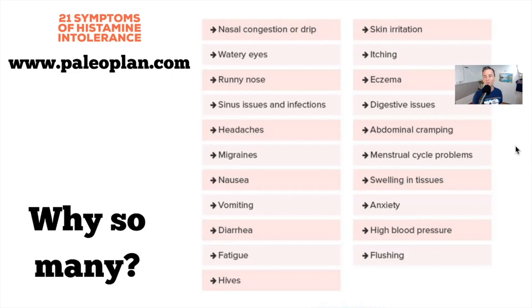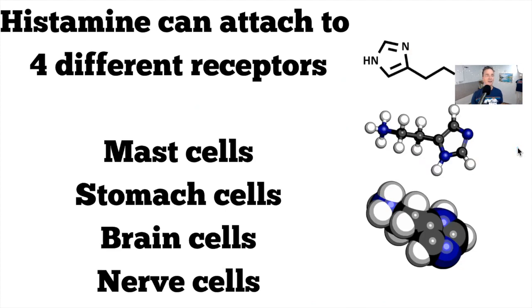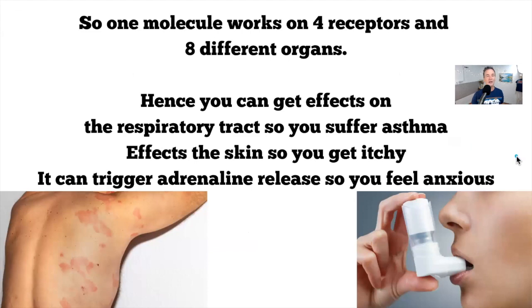Why are there so many symptoms? Because histamine can attach to four different receptors and many different areas. The mast cells produce the histamine, and it will go to stomach cells, brain cells, and nerve cells. Histamine is very active all over the body — that one molecule working on four different receptors will go on to target eight different organs.